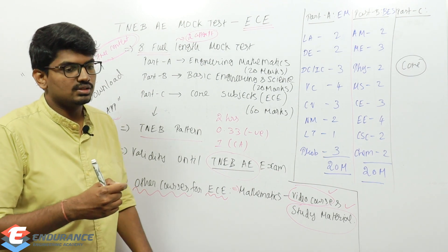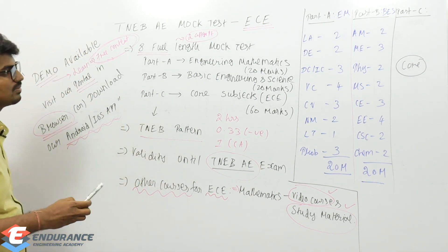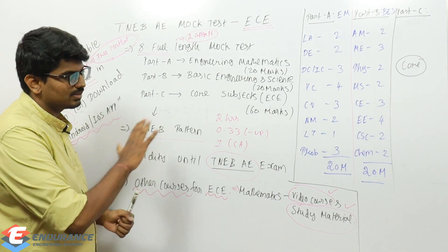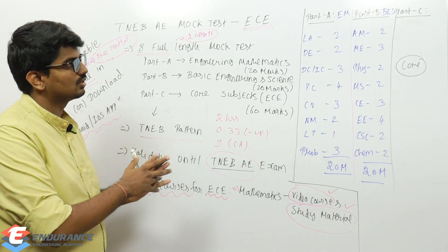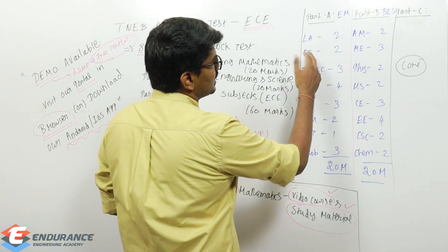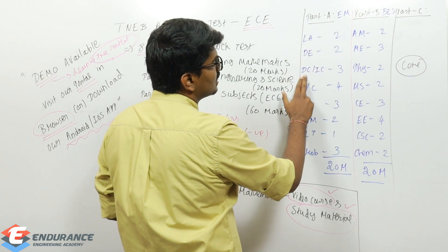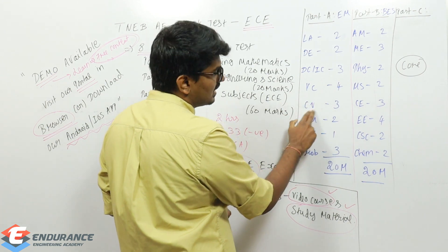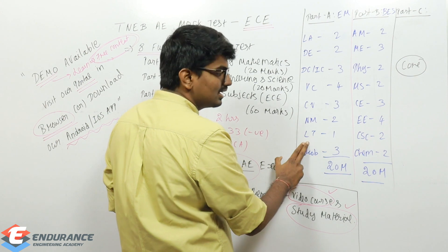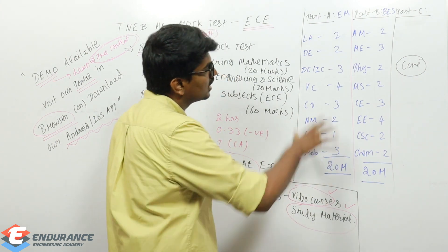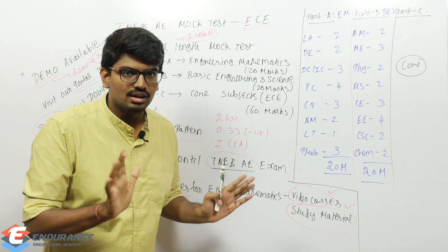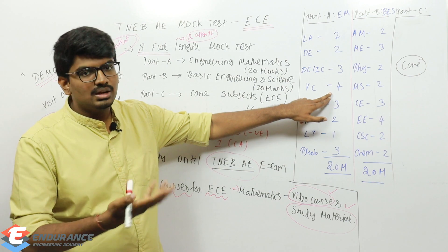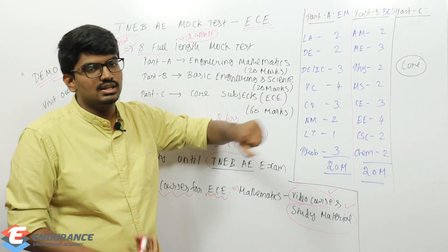Coming to mark distribution, Part A is mathematics: linear algebra has two questions, differential equations has two, differential calculus and integral calculus has three approximately, vector calculus has two, complex variables has three, numerical methods and Laplace transform has one each, and probability has three. Overall it's going to be 20 marks.